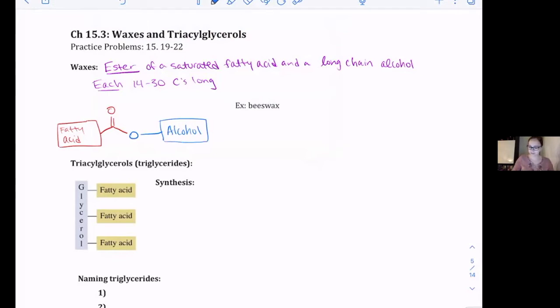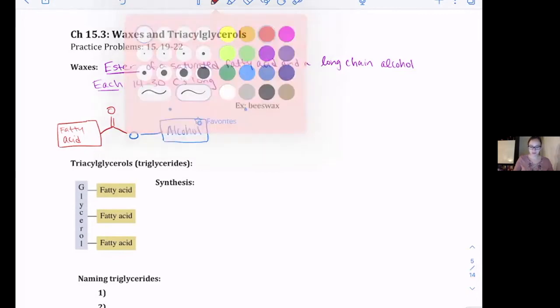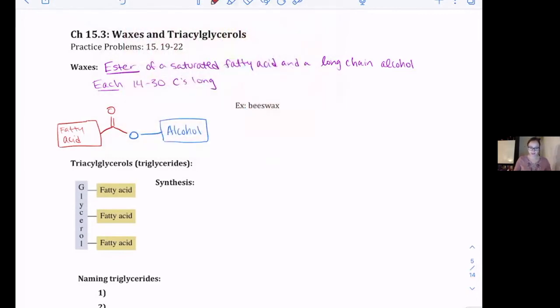So an example of this, in our abbreviated form, which is actually beeswax, is having our CH3 at the end and having CH2. We have 14 CH2s, so 16 carbons total in that fatty acid that it derived from. And then we have our alcohol, which in this case has CH2 again, and then we have 29 of them, and then the CH3 at the end.